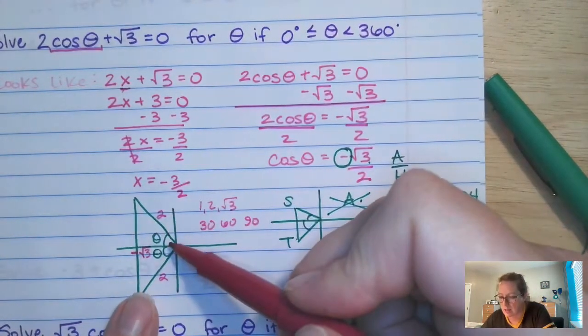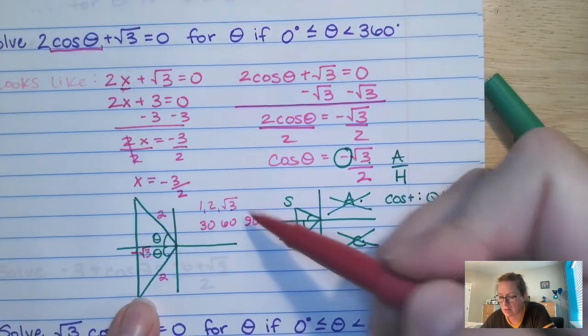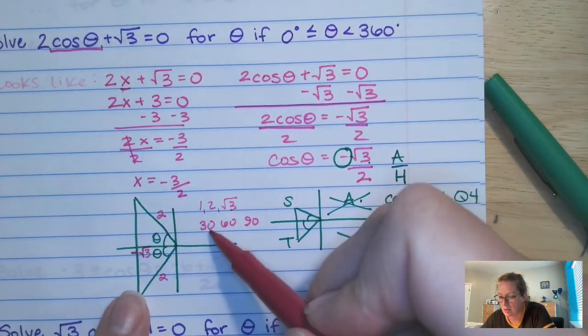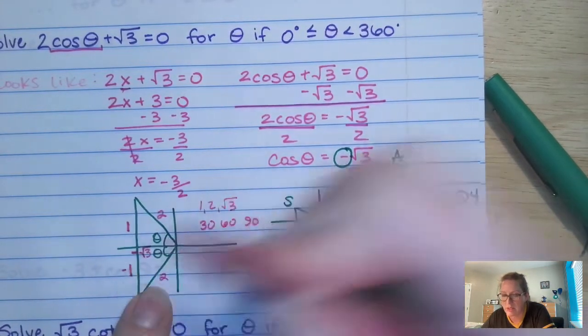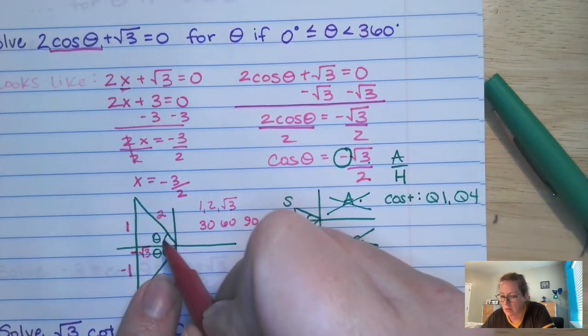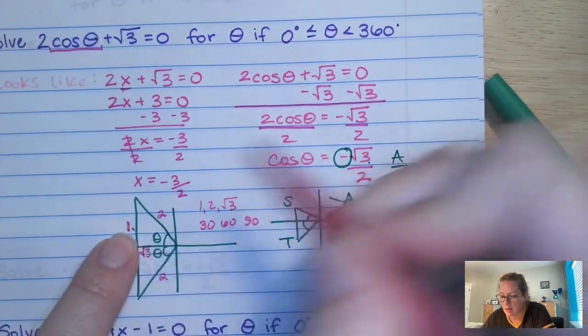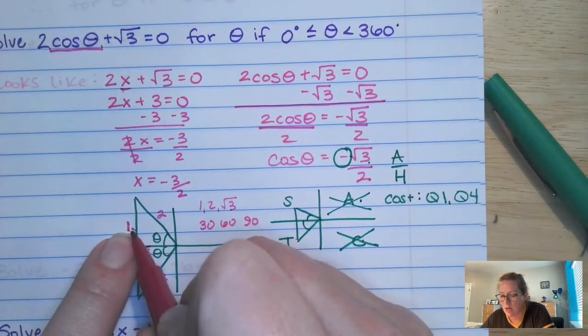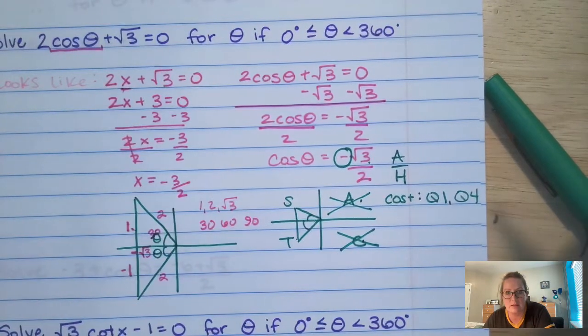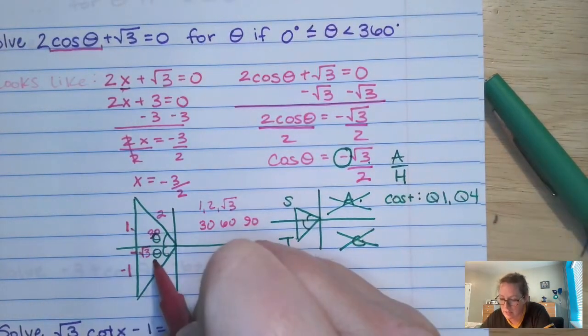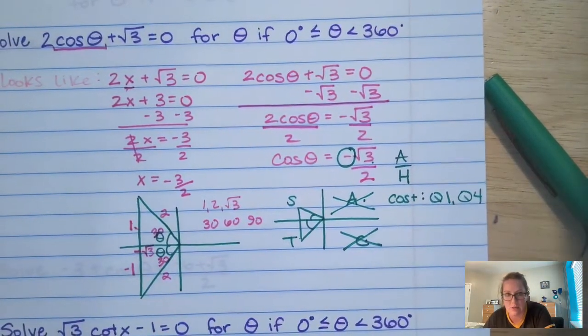Now, we have an adjacent of root 3 and hypotenuse is 2. What reference triangle is this? What reference triangle has a 2 and a root 3? That would be your 1, 2, root 3 triangle, which is your 30, 60, 90. And remember, theta is always going to be opposite of the smaller.